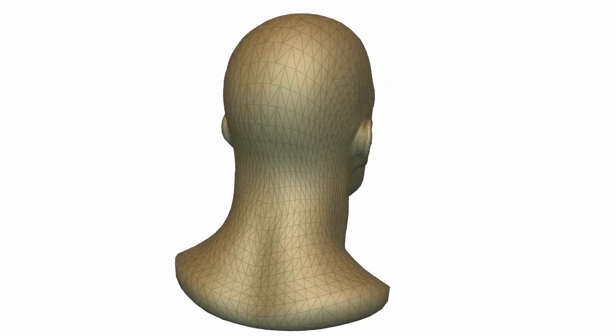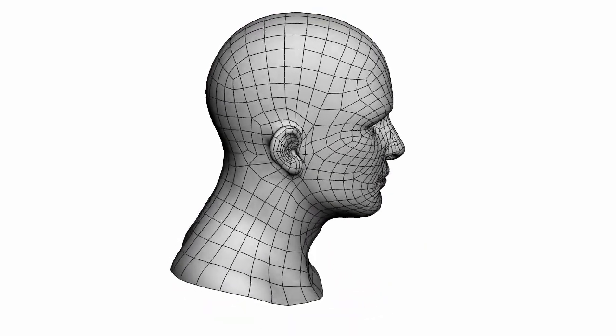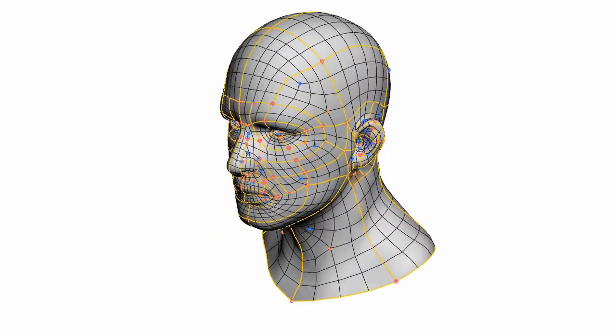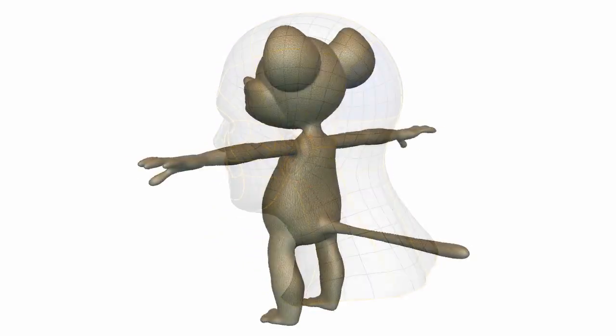We present a new sketch-based approach for remeshing an input 3D model into a quad mesh. In our approach, a quad mesh is represented by a set of patches that may contain irregular vertices inside.